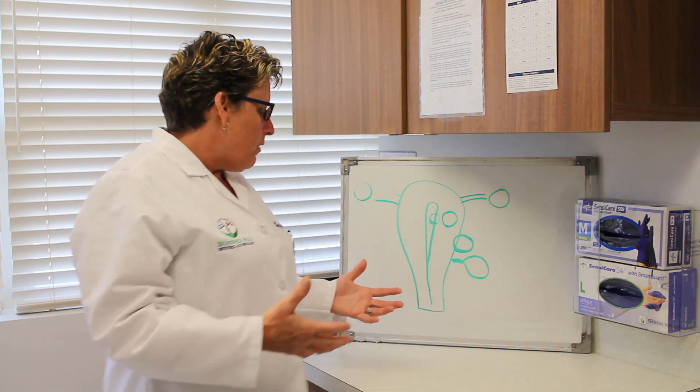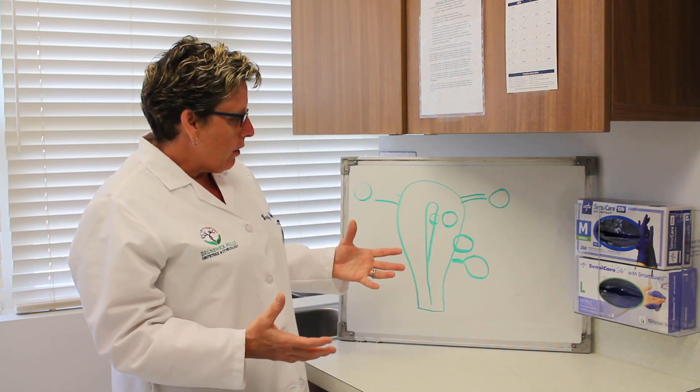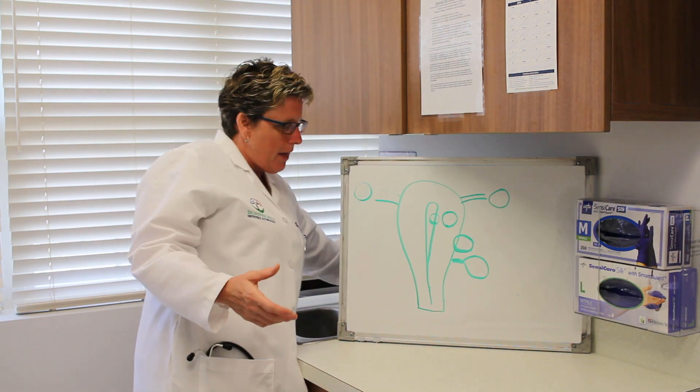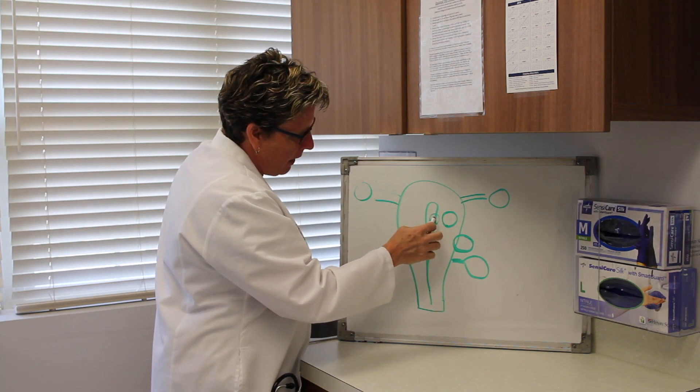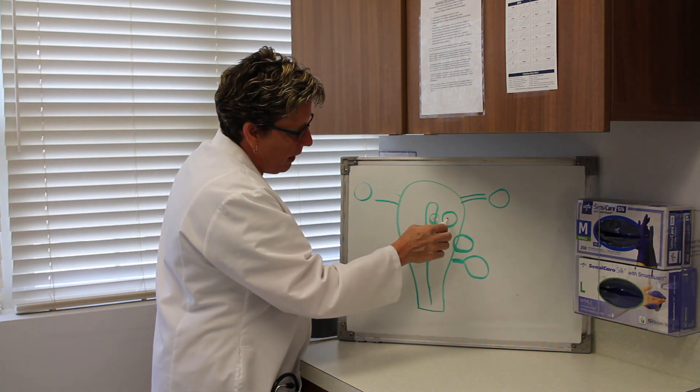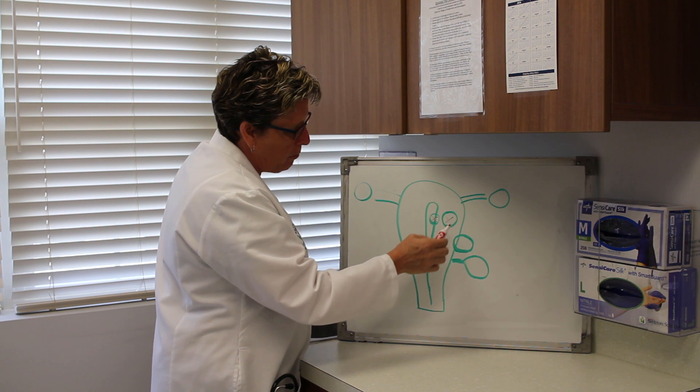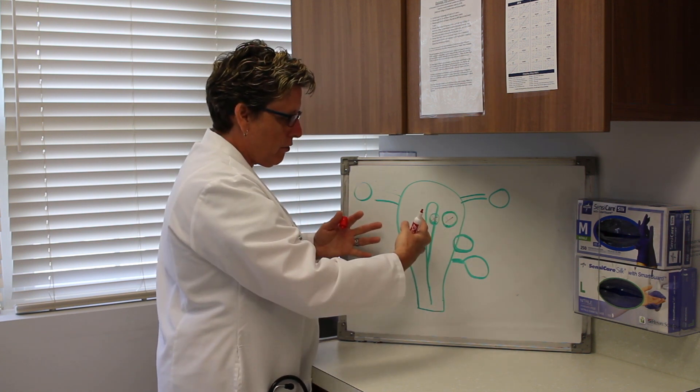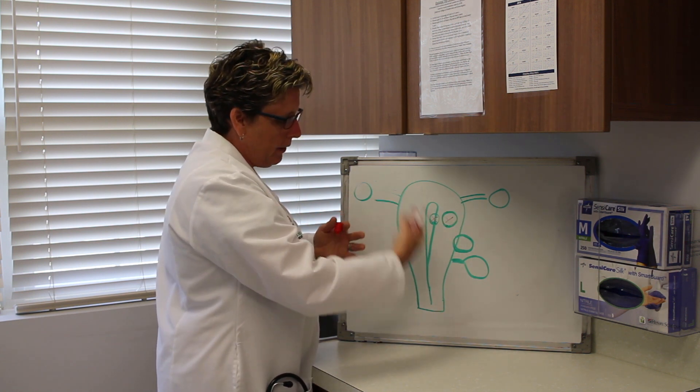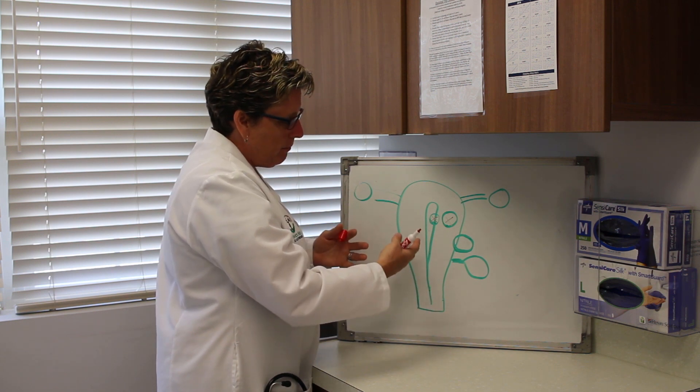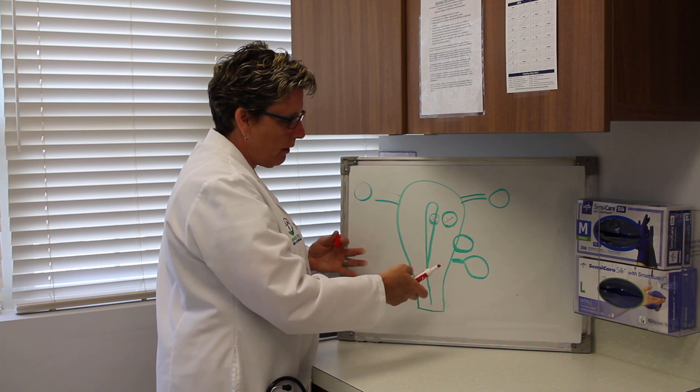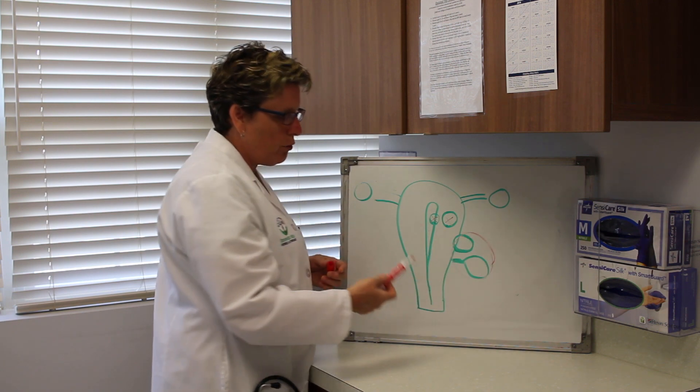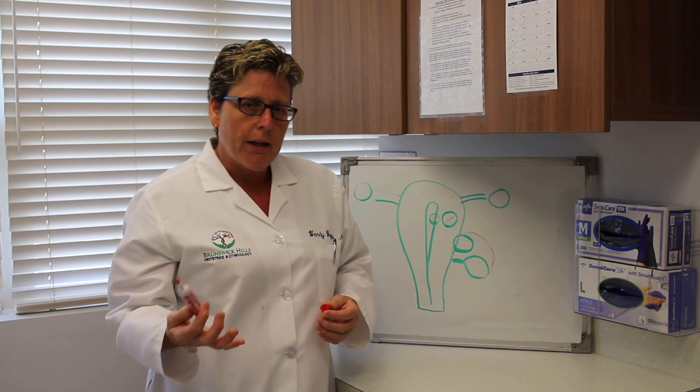First we'll talk about the abnormal bleeding. Usually, the reason that abnormal bleeding occurs with fibroids is that the fibroid itself, whether it's a submucosal or an intramural fibroid, decreases the ability of the uterus to contract during the period, and so bleeding continues without stopping, and sometimes spotting can occur between periods. The subserosal fibroids normally don't have any impact on bleeding patterns.